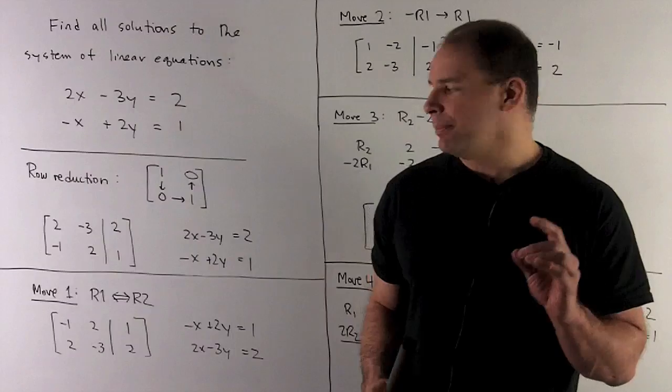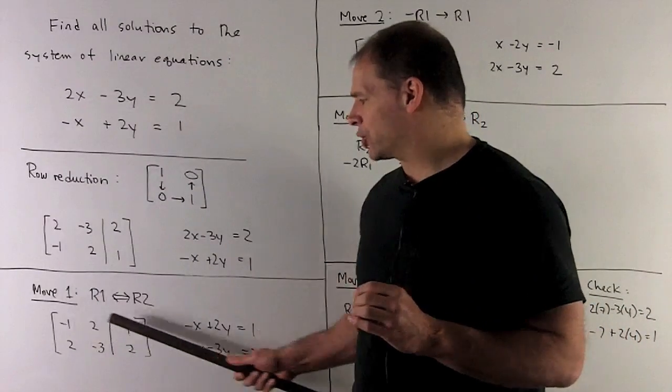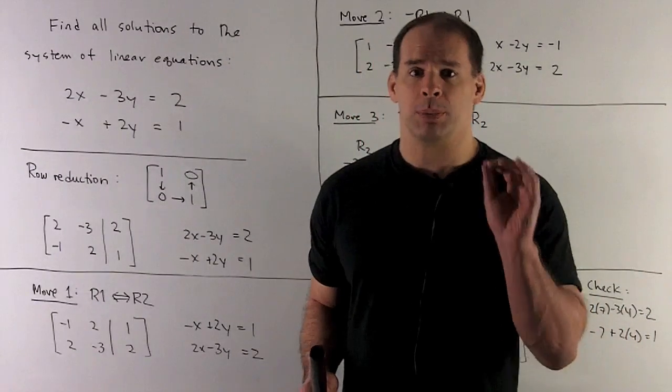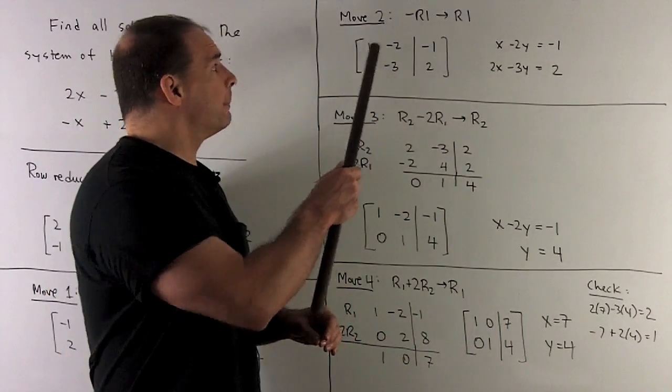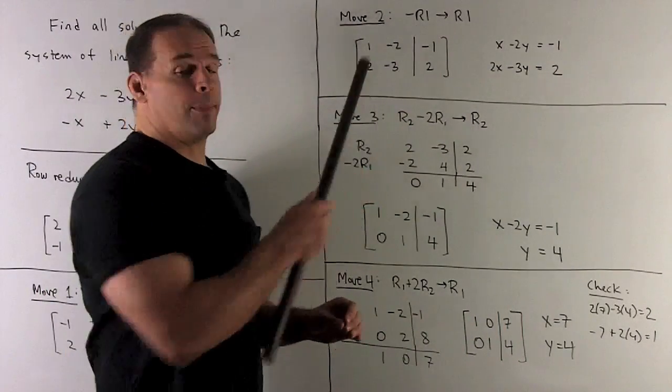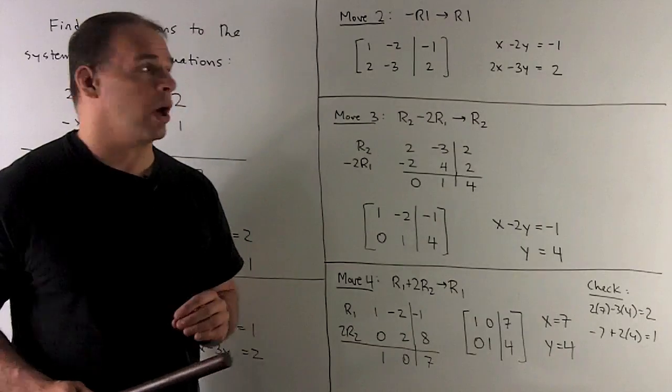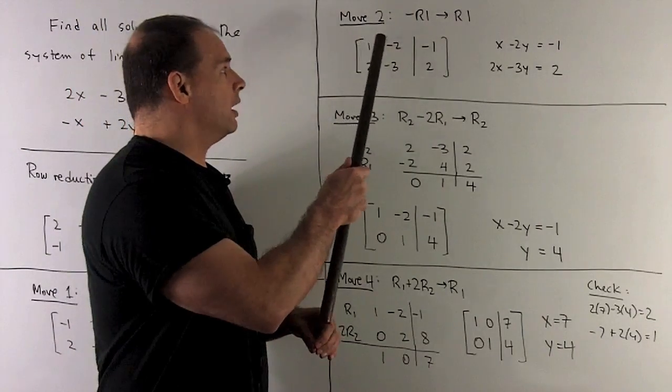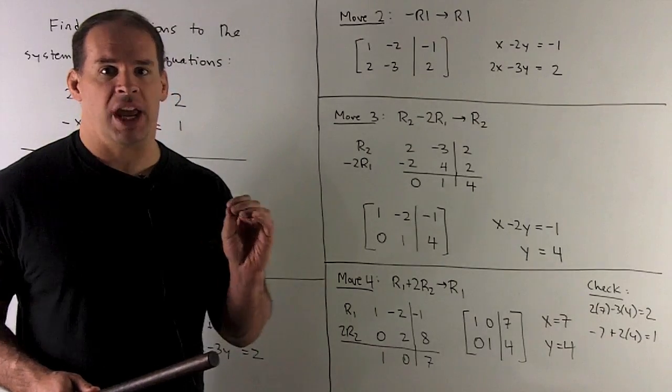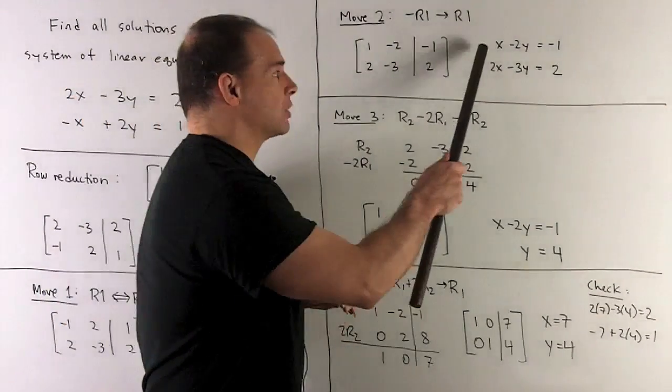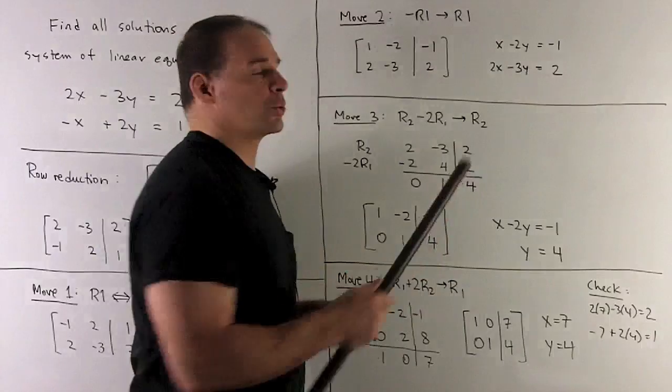Once I've done that, I can now multiply our first row by a minus 1 to put a 1 in our entry. No fractions. So we'll get second move. Multiply first row by a minus 1. That gives me 1 minus 2 minus 1. We take a look at the equations. We just changed equation 1 to x minus 2y equals a minus 1.